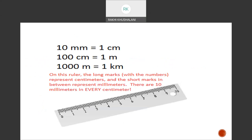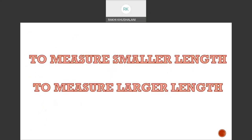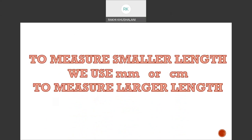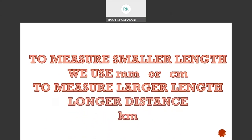The standard units of measurement, which you already know, are millimetres, centimetres, metres, and kilometres. To measure smaller lengths, we use millimetres or centimetres. To measure larger lengths, we use kilometres or metres. Metres come in between — they can measure door height or lengths of cloth. But specifically for smaller lengths, we use millimetres and centimetres, and for longer distances, we use kilometres.